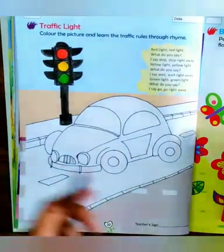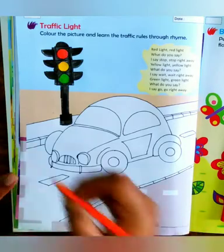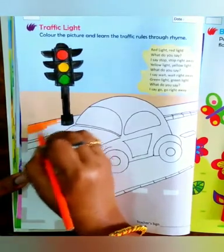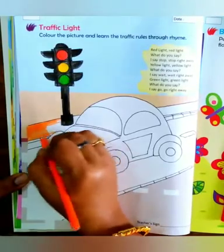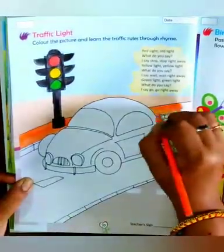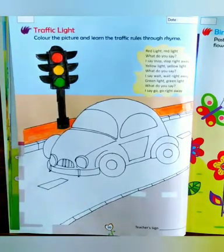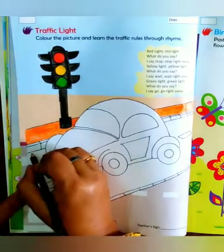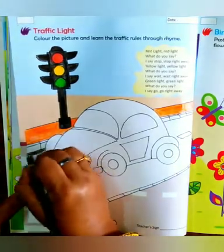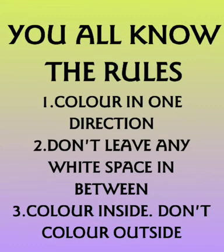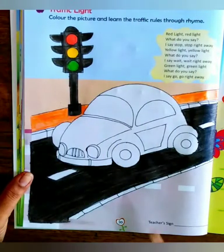Now we will color the car and the road. We will be coloring orange here. Leave this area white. And now we will color the road black. I have completed the road.